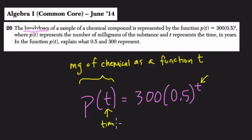both represent the time that has passed in years. They tell us that, right? It's in years. You don't know if t is necessarily minutes or seconds. They'll specify that. So what do 0.5 and 300 represent?